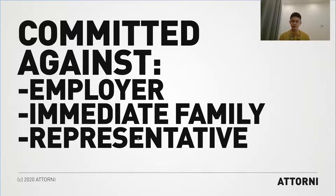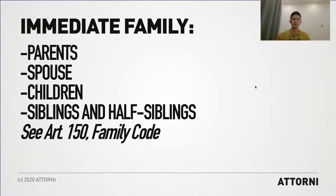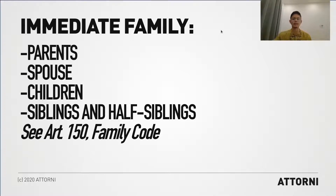What does the code mean by the employer's immediate family? The Department of Labor and Employment clarified that this should be construed according to Article 150 of the Family Code. So under Article 150, the immediate family members include the parents, the employer's spouse, the children of the employer, siblings, and half-siblings of the employer.